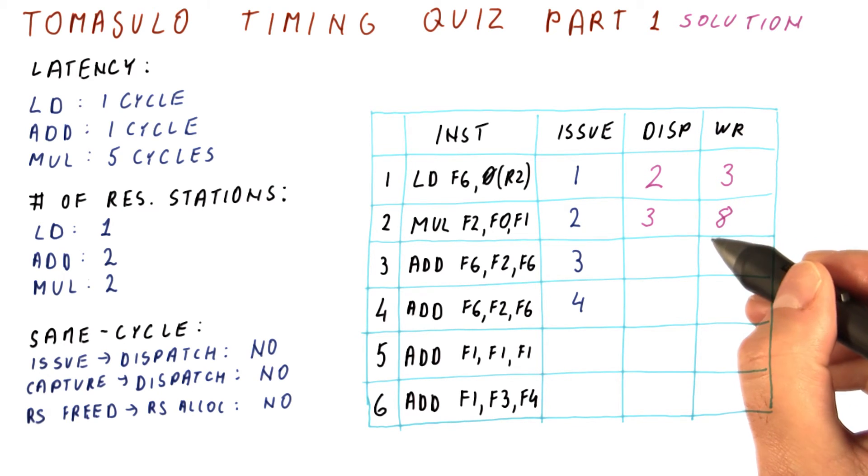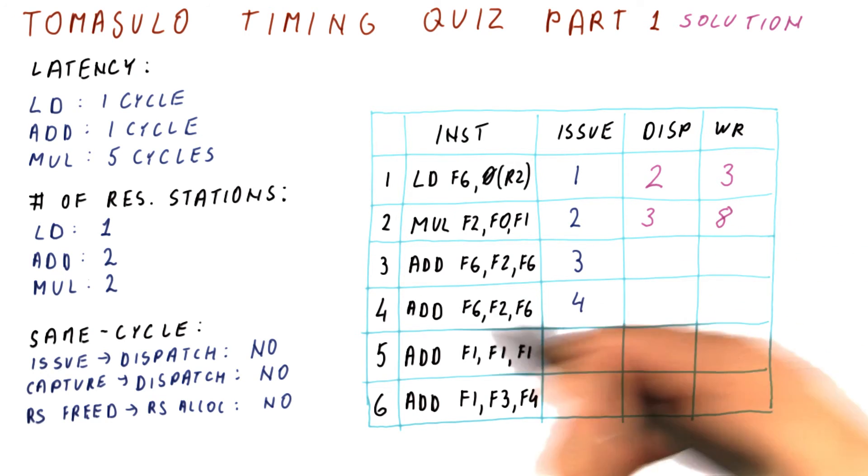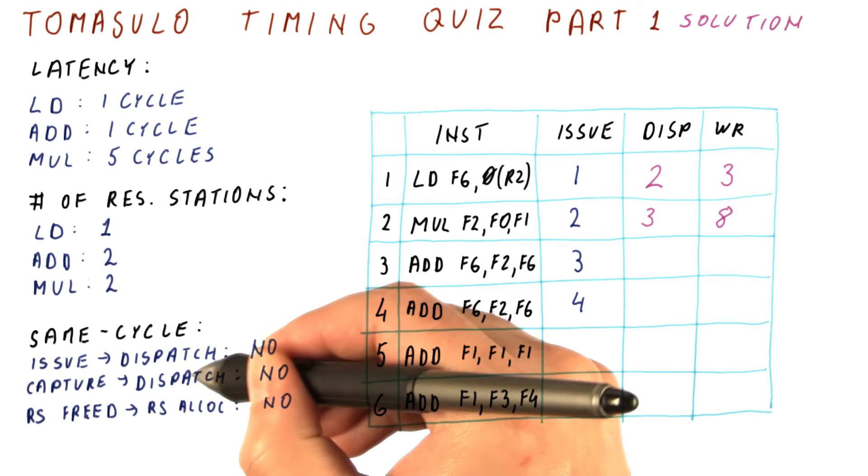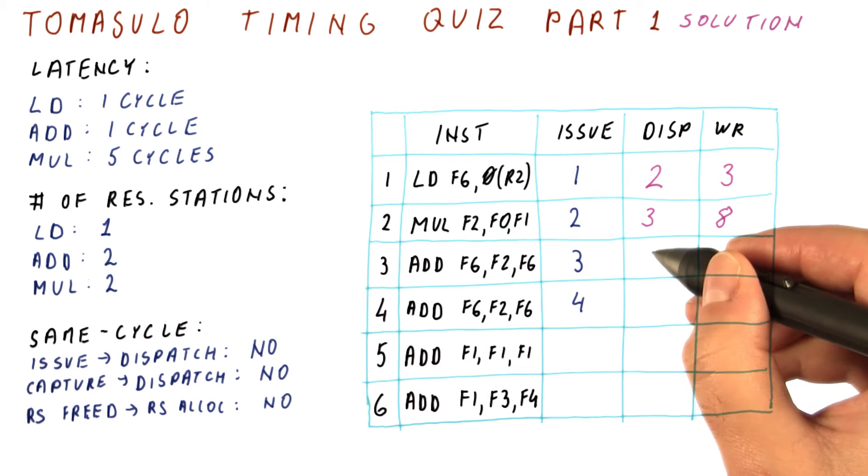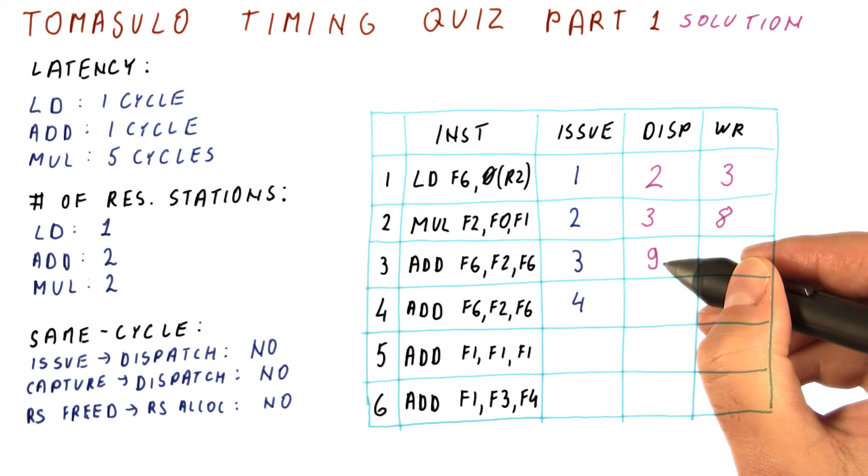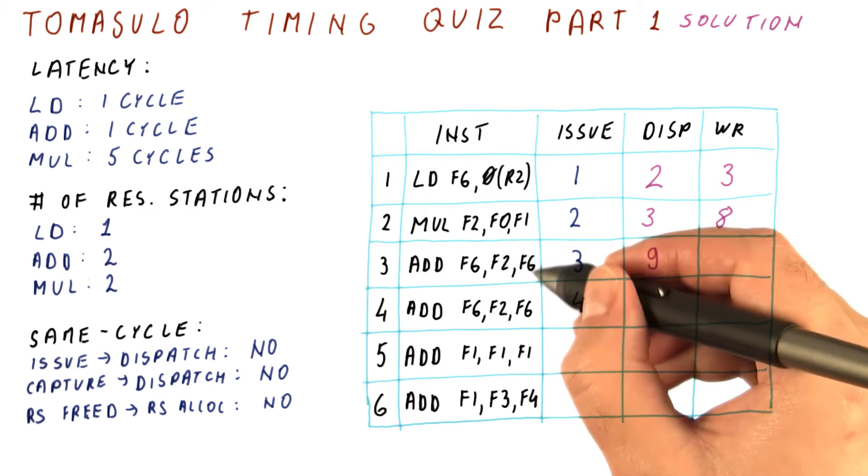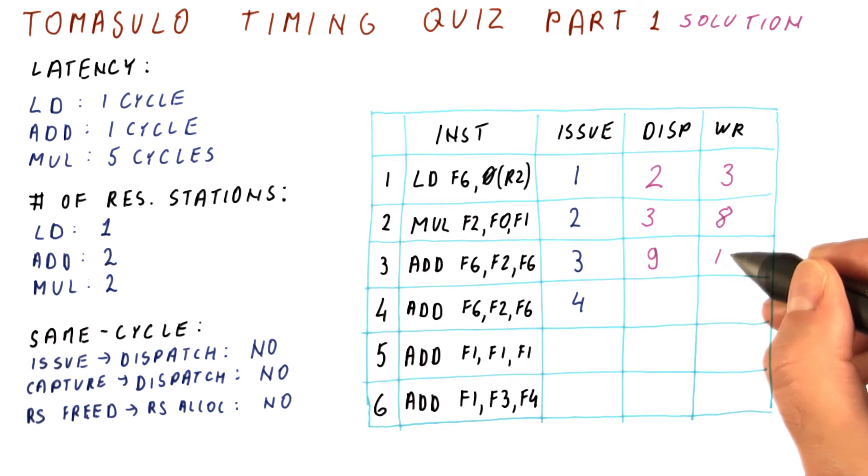This instruction is going to wait and capture its result in cycle eight, and then it cannot capture and dispatch in the same cycle. So it will dispatch in the very next cycle, which is cycle nine. Because this is an add with a latency of one cycle, it will write its result in cycle ten.